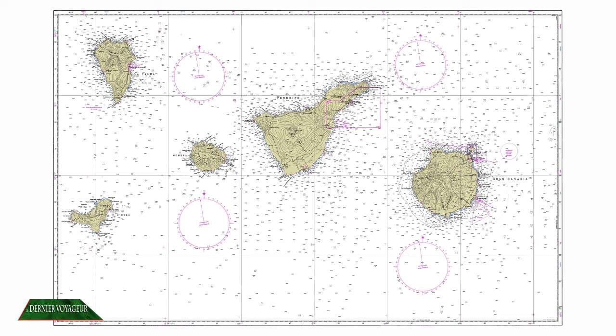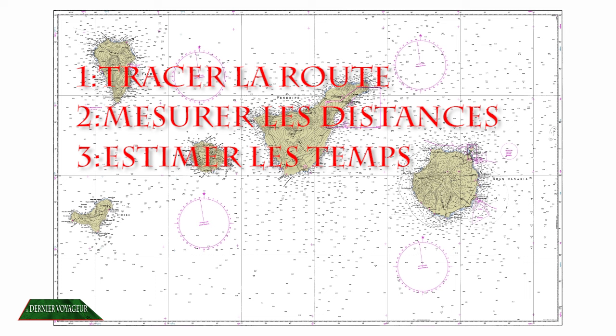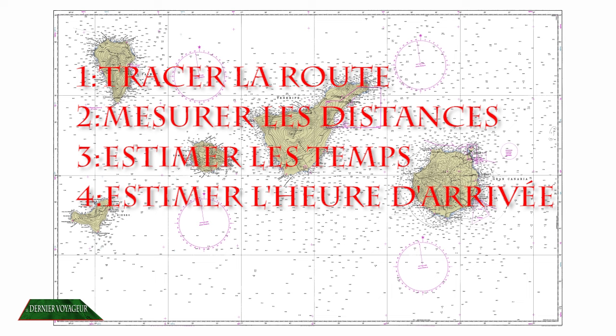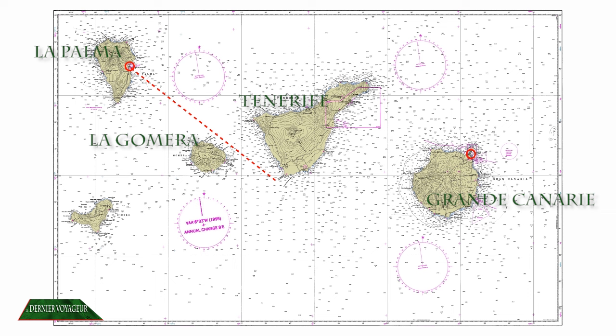Pour conclure cette vidéo, nous allons réaliser la première partie d'une navigation complète. Au cours de la préparation, nous tracerons notre route, nous mesurerons les distances importantes, puis nous estimerons les temps de passage au point de virement, pour conclure avec notre heure estimée d'arrivée. Nous sommes dans l'archipel des îles Canaries, en Atlantique, au large des côtes marocaines. Notre bateau est amarré dans le port de Santa Cruz de la Palma, et nous prévoyons une navigation vers l'île de Grande Canarie, avec une arrivée au port de Las Palmas. Notre route passera entre la Gomera et Ténérife, puis nous remonterons vers le nord-est pour aborder Grande Canarie par le nord. Enfin, nous contournerons la pointe de la Isleta, pour redescendre au sud et venir nous reposer au port de Las Palmas.